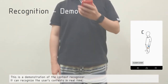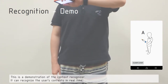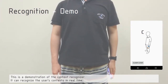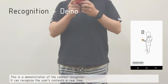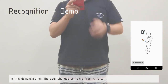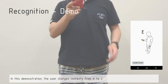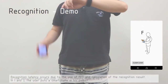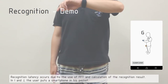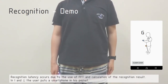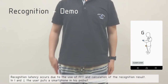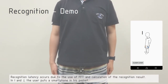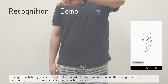This is a demonstration of the context recognizer. It can recognize the user's contexts in real time. In this demonstration, the user changes contexts from A to J. Recognition latency occurs due to the use of FFT and calculation of the recognition result. In contexts I and J, the user puts the smartphone in his pocket.